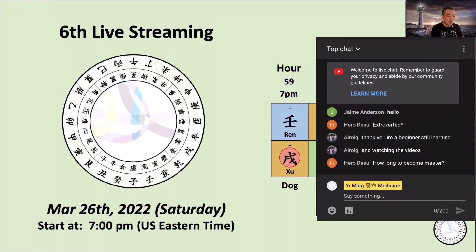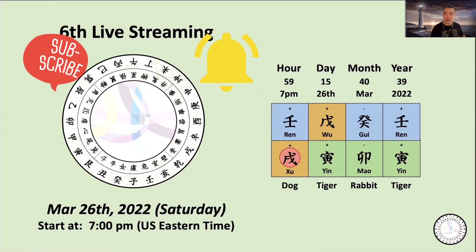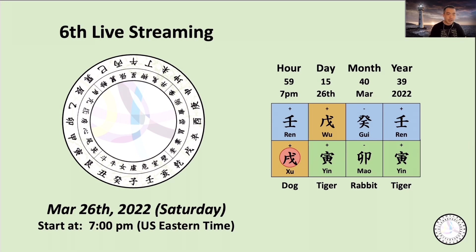How long does it take to become a master? I don't know exactly. At least three to six months, you might start rotating all the five elements in different ways. So in six months, I usually say you become really familiar with this language. After six months, it depends on your creativity and your thinking process. I think it's forever learning.